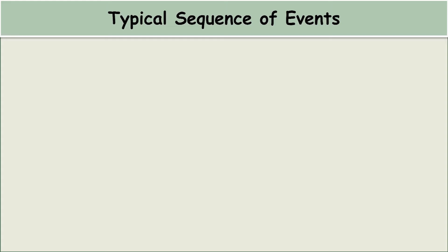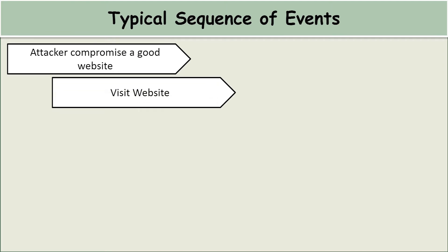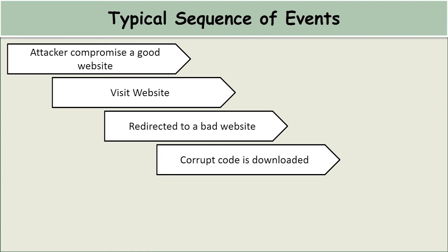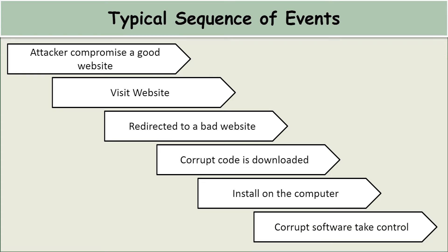Typical Sequence of Events. An attacker compromises a good website. The user visits the website and is redirected to a bad website. Corrupt code is downloaded and installed on the computer, and the corrupt software takes control.